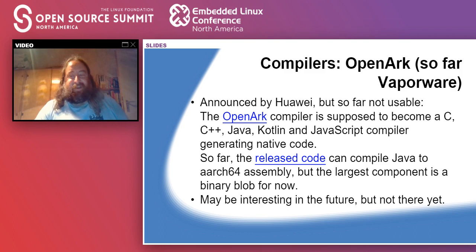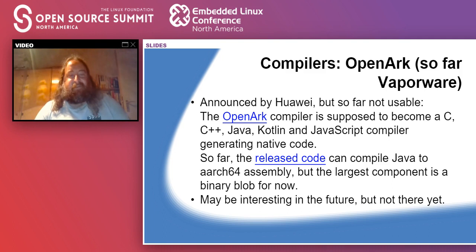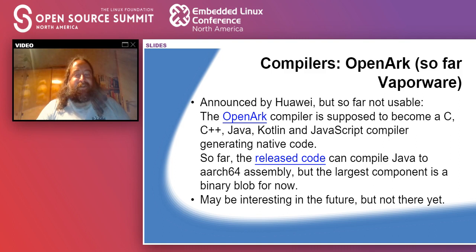Another interesting compiler — or at least one that might be interesting at some point — is OpenArc. So far it's vaporware, but it was announced by Huawei last year. It's supposed to become a C, C++, Java, Kotlin, and JavaScript compiler that generates native code, and they promise it will be fully open at some point. So far they've only released a bit of code that can compile Java to AArch64 assembly, and it does that by calling into a binary blob. If they stick to their promise it could become an interesting option in the future, especially if you need to mix languages, but right now it's not there yet.